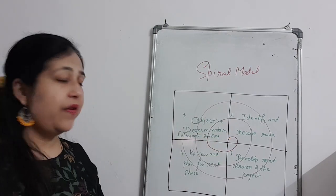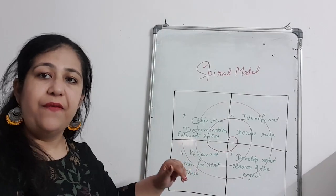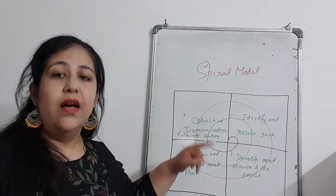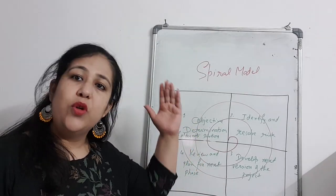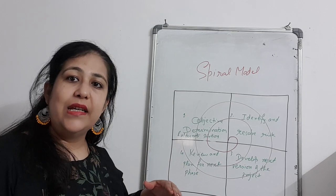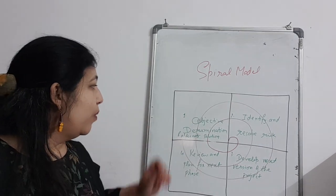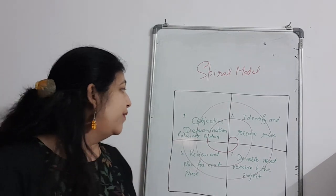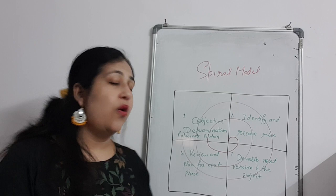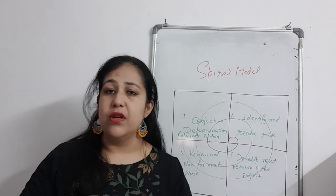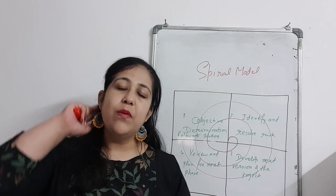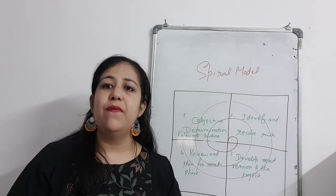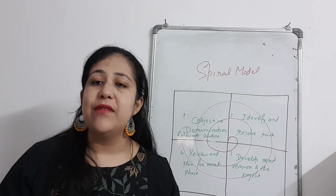There are 4 quadrants and each phase will go through these 4 quadrants. Each phase corresponds to the normal SDLC phases. The first quadrant is objective determination and alternate solution. The first time we go into this phase, we will only determine the objective of that phase.